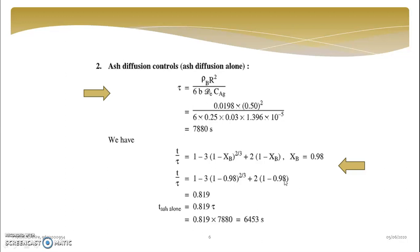There are three separate expressions on three different resistances and entire thing are covered there. So just you have to put the values in formula. So rho B R square upon 6B DE into CAG, all values you will substitute and you will get tau as 7880.